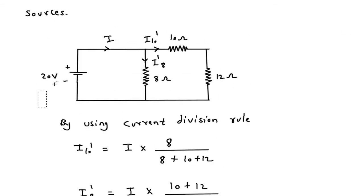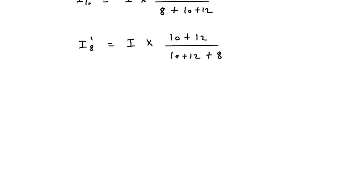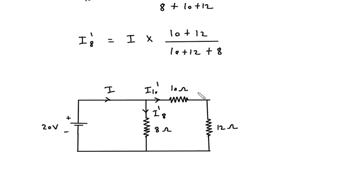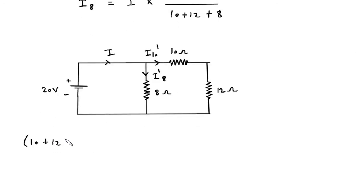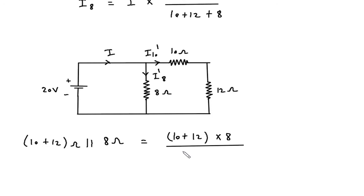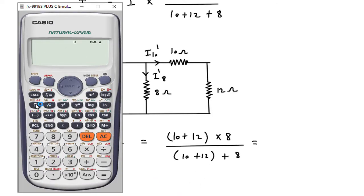Now we will find the total current I. Here we can see the 10 ohm and 12 ohm in parallel with 8 ohm. The equivalent resistance is (10 plus 12) into 8 divided by (10 plus 12 plus 8), which equals 5.86 ohm.